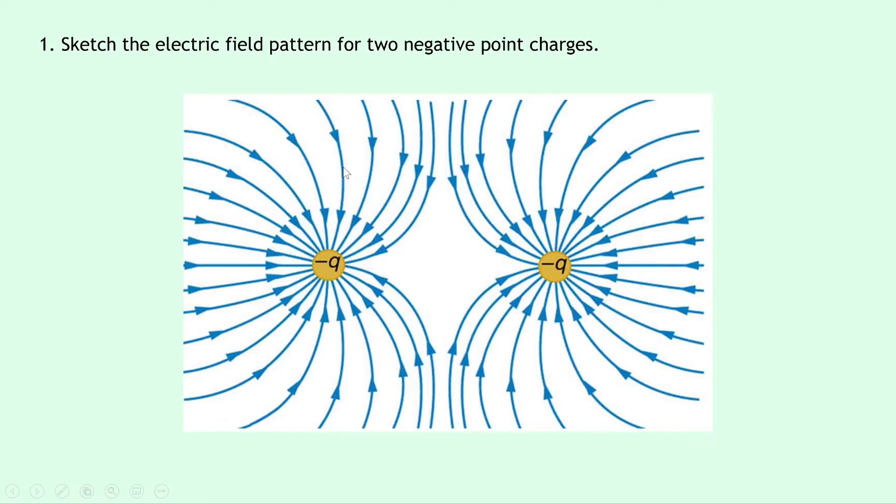You'll also notice how the electric field lines on the left hand side and the right hand side look like they do for the case where there's a single negative charge and that's what we saw in the theory video. Your sketch might look a bit simpler than this with fewer field lines but this one shows you what happens if you were to draw lots of field lines. Make sure your arrows are pointing in the right way and you've got this main shape in the middle where there are no field lines.